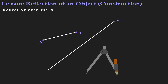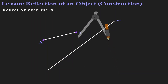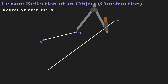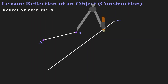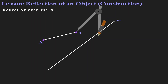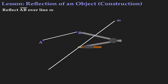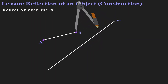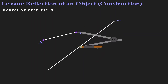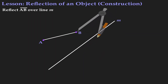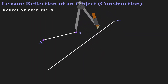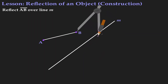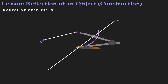The first thing we're going to do is get our metal leg and put it on point B. Once we have the metal leg on B, I'm going to open my compass so that it intersects the line at two different locations. So let me create an arc.